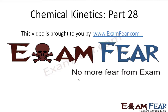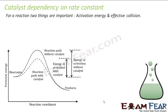This video on chemical kinetics part 28 is brought to you by examfear.com. Let's talk about the effect of catalyst on the rate of reaction. Collision theory helps us understand this better. A catalyst is a substance that alters the rate of reaction without undergoing any permanent chemical change. For example, when we eat food, digestion is done by catalysts — they are not consumed in the reaction but they increase the rate of reaction.